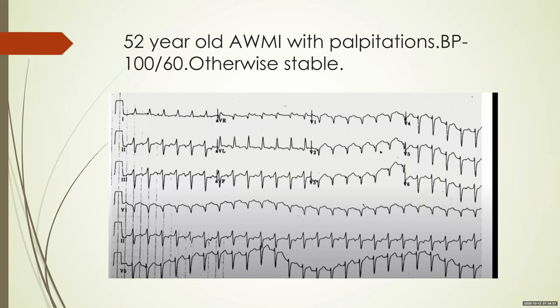Here is a 52-year-old with anterior wall MI presenting with palpitations; BP is 160, otherwise stable. The ECG shows a fairly narrow complex tachycardia with QRS around 100 ms and rate around 140 to 150. Is this a VT or an SVT? By default, an anterior wall MI patient presenting with wide complex tachycardia suggests VT, but this complex is not that wide — around 100 to 110 ms. So is it VT or SVT?